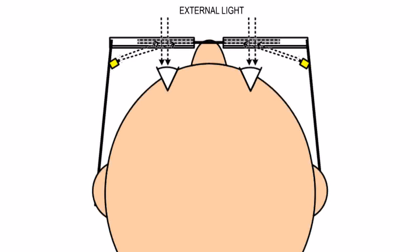The user sees a real-world image via external light. On top of that, left and right image sources project an image light which is seen by the user as a virtual image superimposed over the real world as an augmented reality.